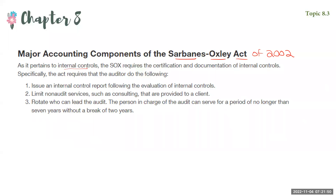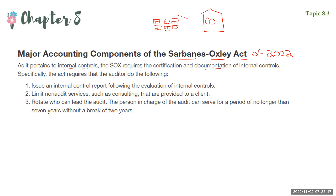That provision says that top management must certify and show documentation of internal controls. The external auditor for the company — examples would be PricewaterhouseCoopers or Ernst & Young — has to oversee the company, their financial statements, and also their internal controls.